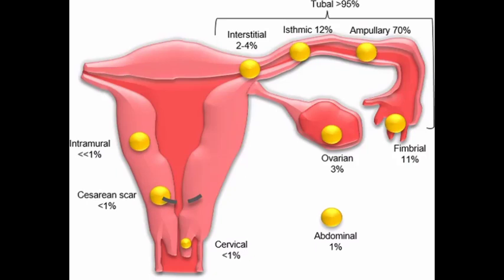Ultrasound diagnosis of ectopic pregnancy. Non-tubal ectopic pregnancy: as previously mentioned, 5% of all ectopic pregnancies are non-tubal. However, they contribute disproportionately to the morbidity and mortality in women with an ectopic pregnancy. We will now describe the different non-tubal ectopic pregnancies, their locations and their ultrasound appearances.